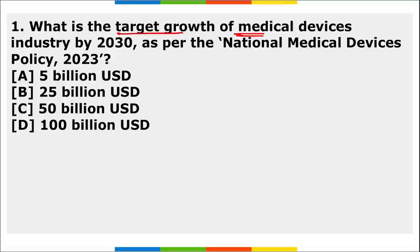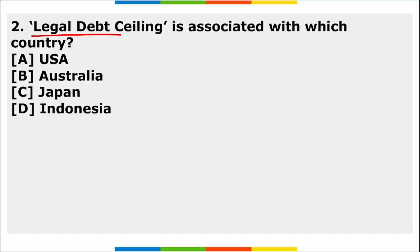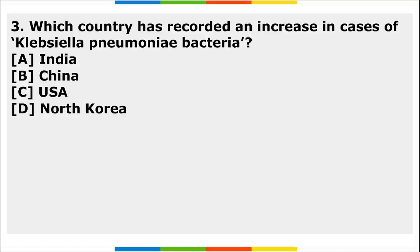Homework questions: First, what is the target growth of the medical devices industry by 2030 as per the National Medical Device Policy 2023? Second, the legal debt ceiling is associated with which country — we are seeing this news daily and it is also related to recession. Third, which country has recorded an increase in cases of the Klebsiella pneumonia bacteria?